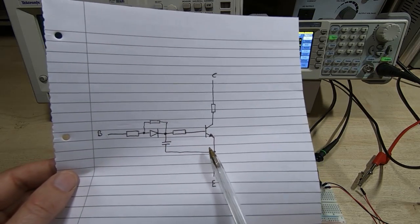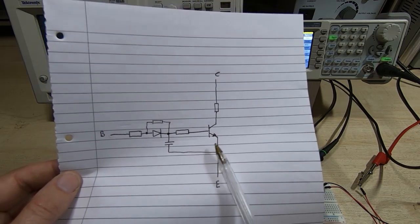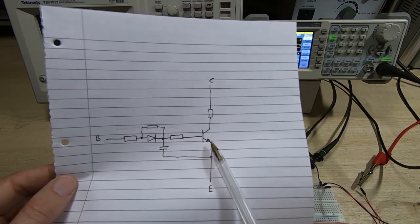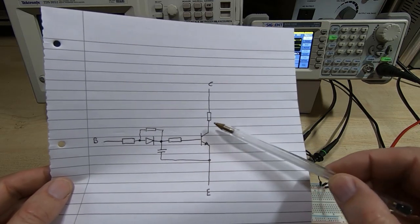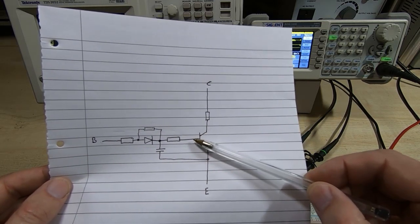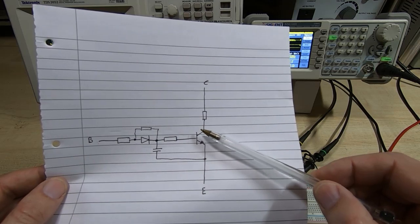The transistor at some point will start to turn on as the voltage increases, but if you keep going past that point, the transistor might have gone into saturation - it's fully turned on.